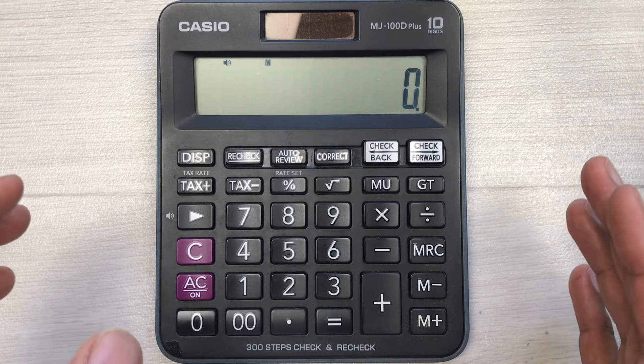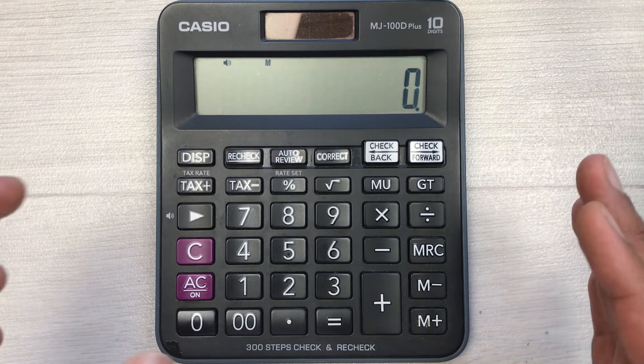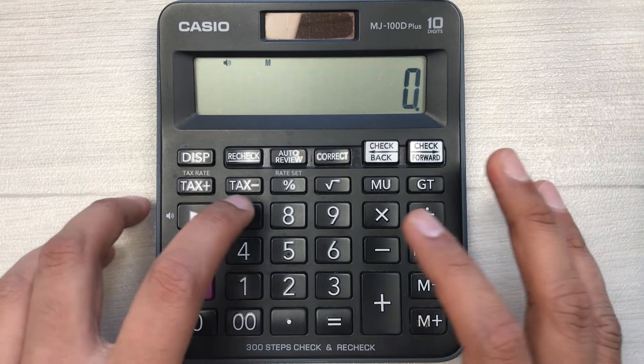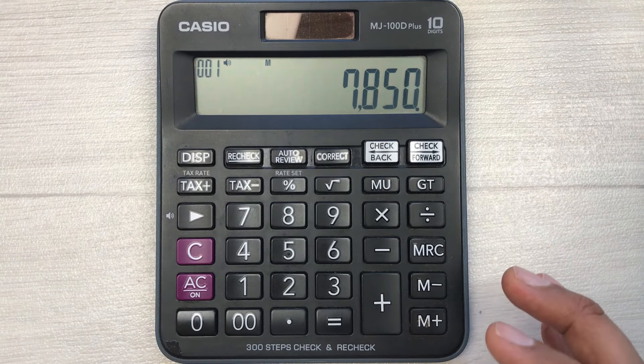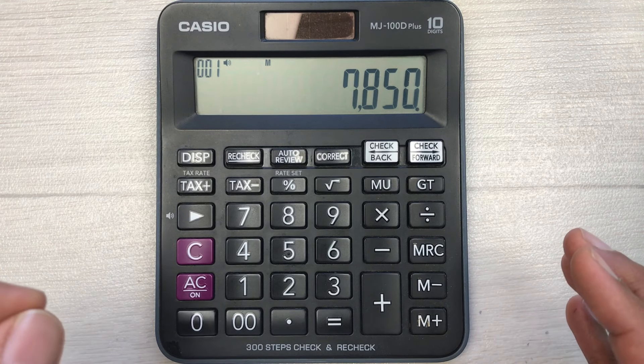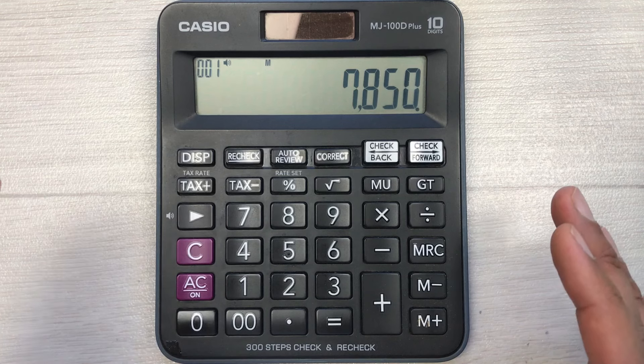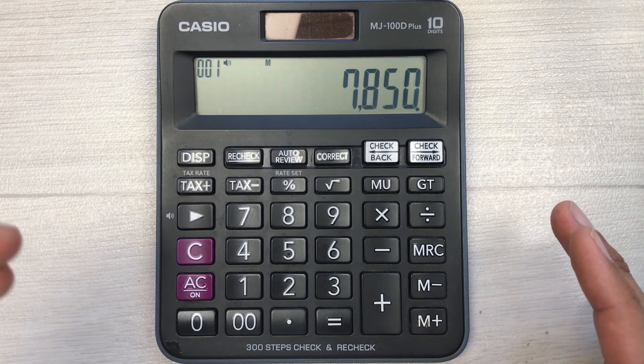For example, you are in a shop and you like some item and the price is $7,850. You want to find out what will be the final price after 20% discount, how much you have to pay.